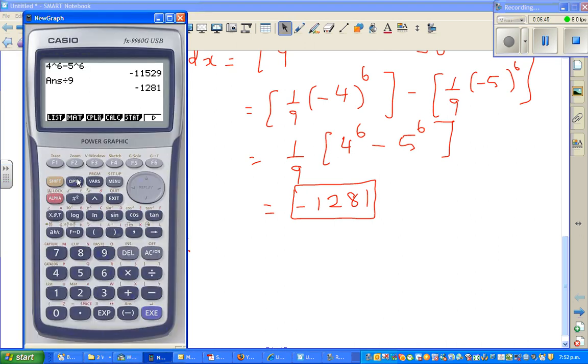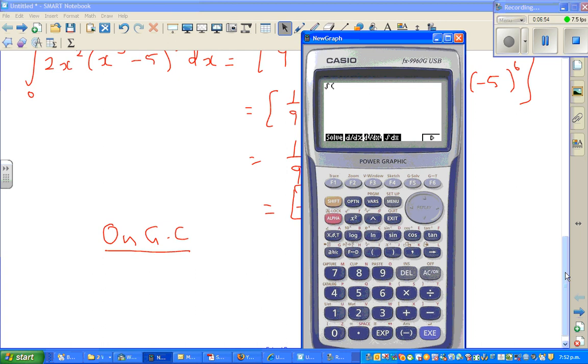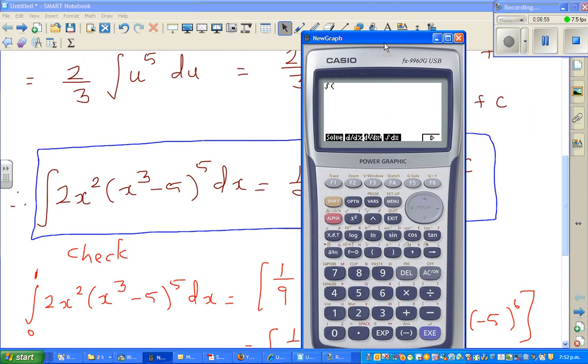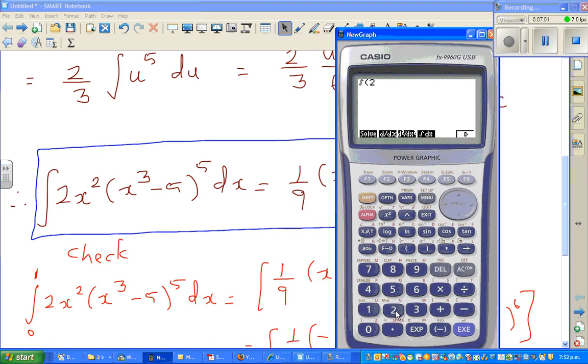How will we do that? So you go option, calculus, integration. So let me delete this. Integration of what was the function? So let me bring the function back. This was the function. So I'll type in 2x squared bracket, x to the power 3 minus 5 raised to 5. And it is definite integration between 0 and 1. So you go comma 0 comma 1, close the bracket.